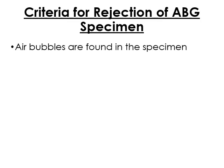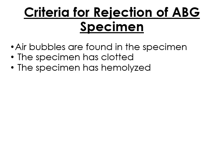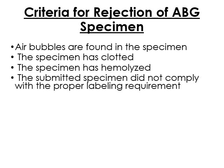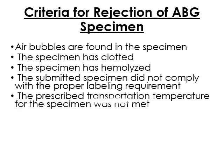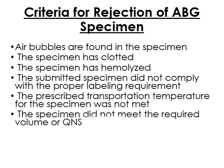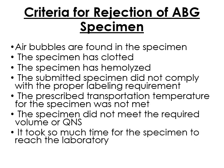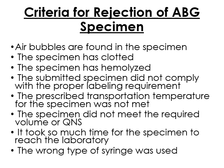Criteria for rejection of ABG specimens: presence of air bubbles, clots, hemolyzed specimen, no label, incorrect temperature (specimen should be in ice slurry), quantity not sufficient (QNS), specimen took too long to reach the laboratory, and wrong type of syringe used.